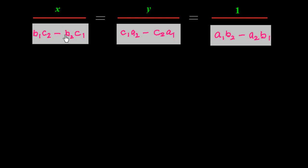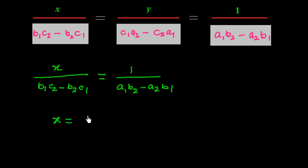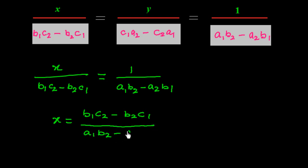So x over (b1c2 minus b2c1) is equal to 1 over (a1b2 minus a2b1). We cross multiply to get: x is equal to (b1c2 minus b2c1) over (a1b2 minus a2b1). So this is the formula for x.